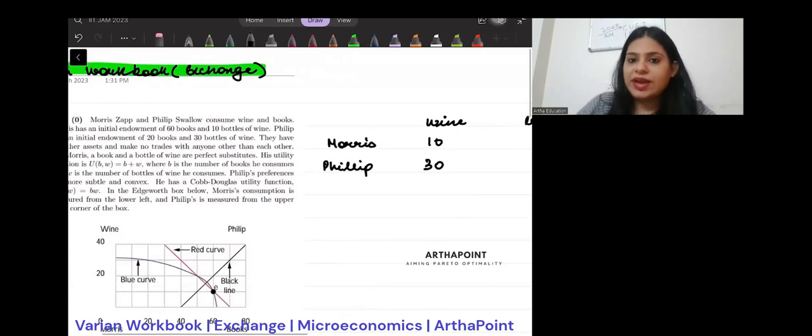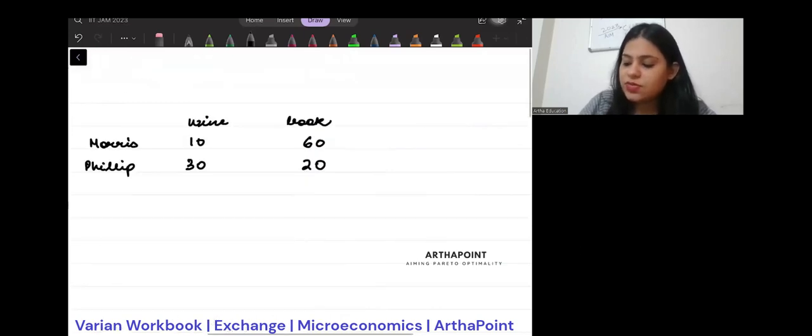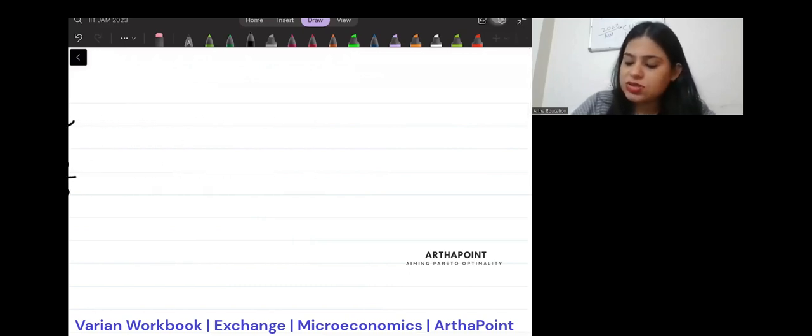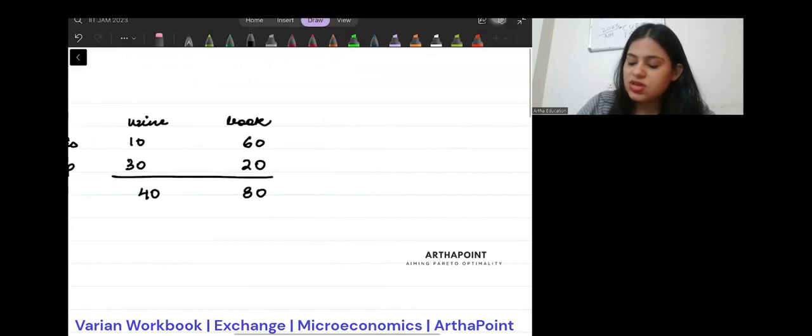If I were to go ahead and add the two things together, I will get 80 and this will be 40. So, if I were to make an Edgeworth box, how will this be? Just think about it.